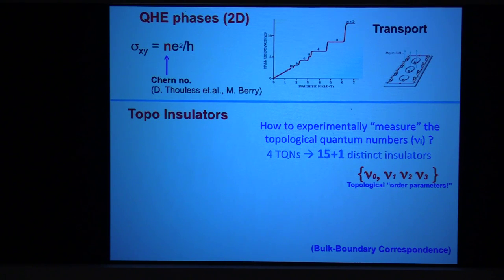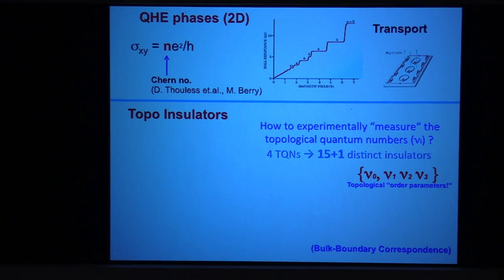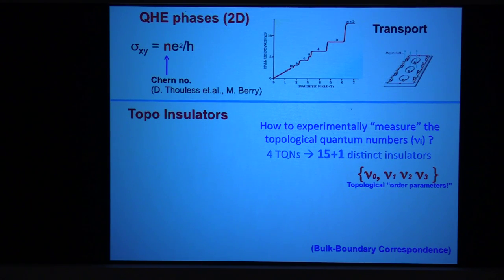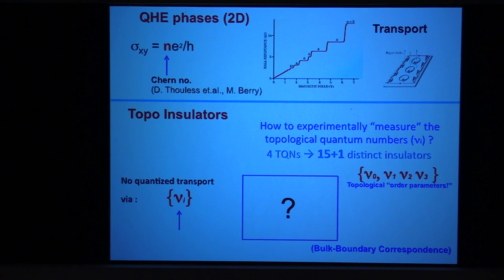You would think that topological band theory is ahead of string theory in some sense, because it has real impact in experiments. So we have to come up with an algorithm showing why it's real and why it has more value than just a theory.